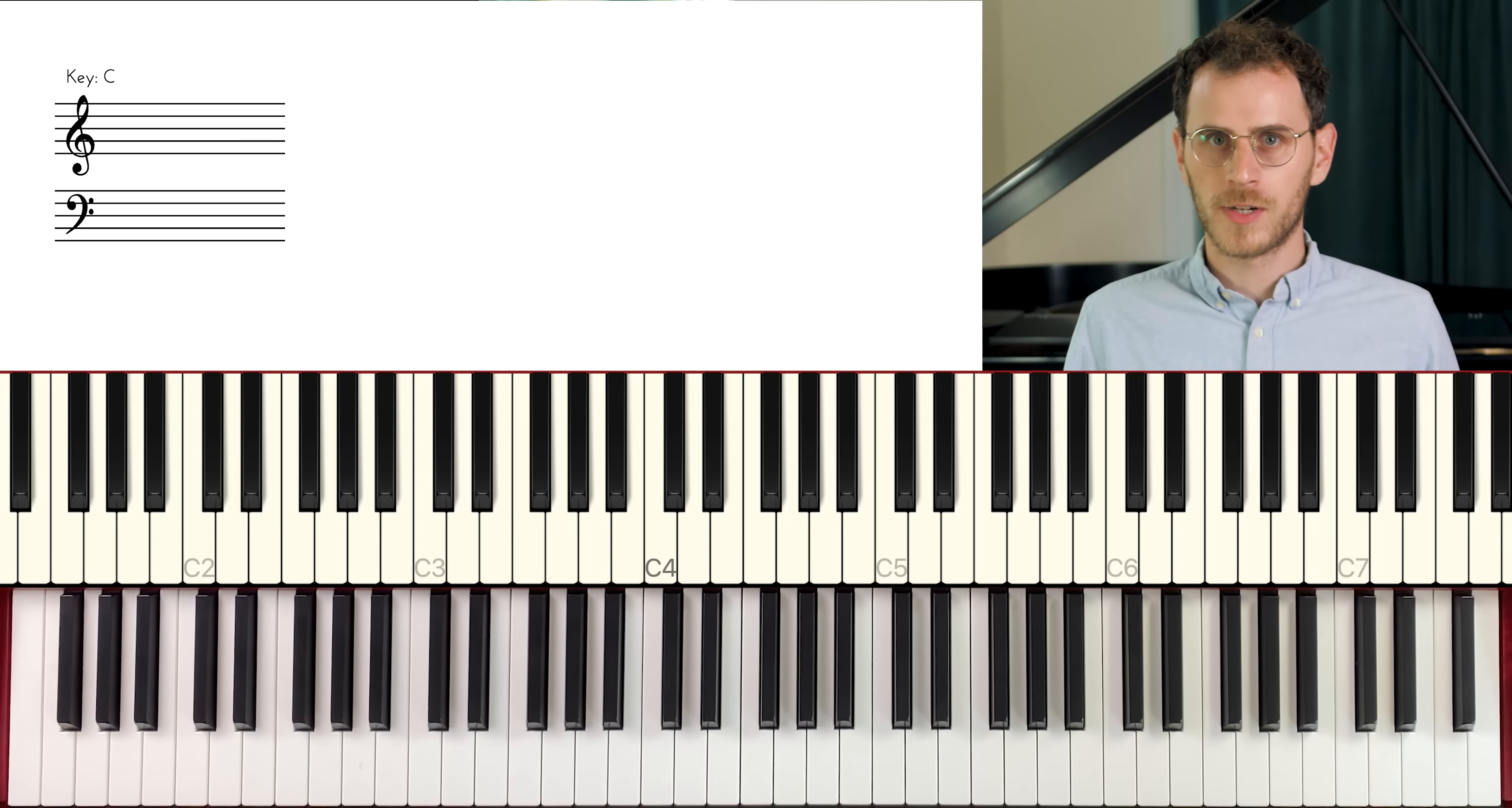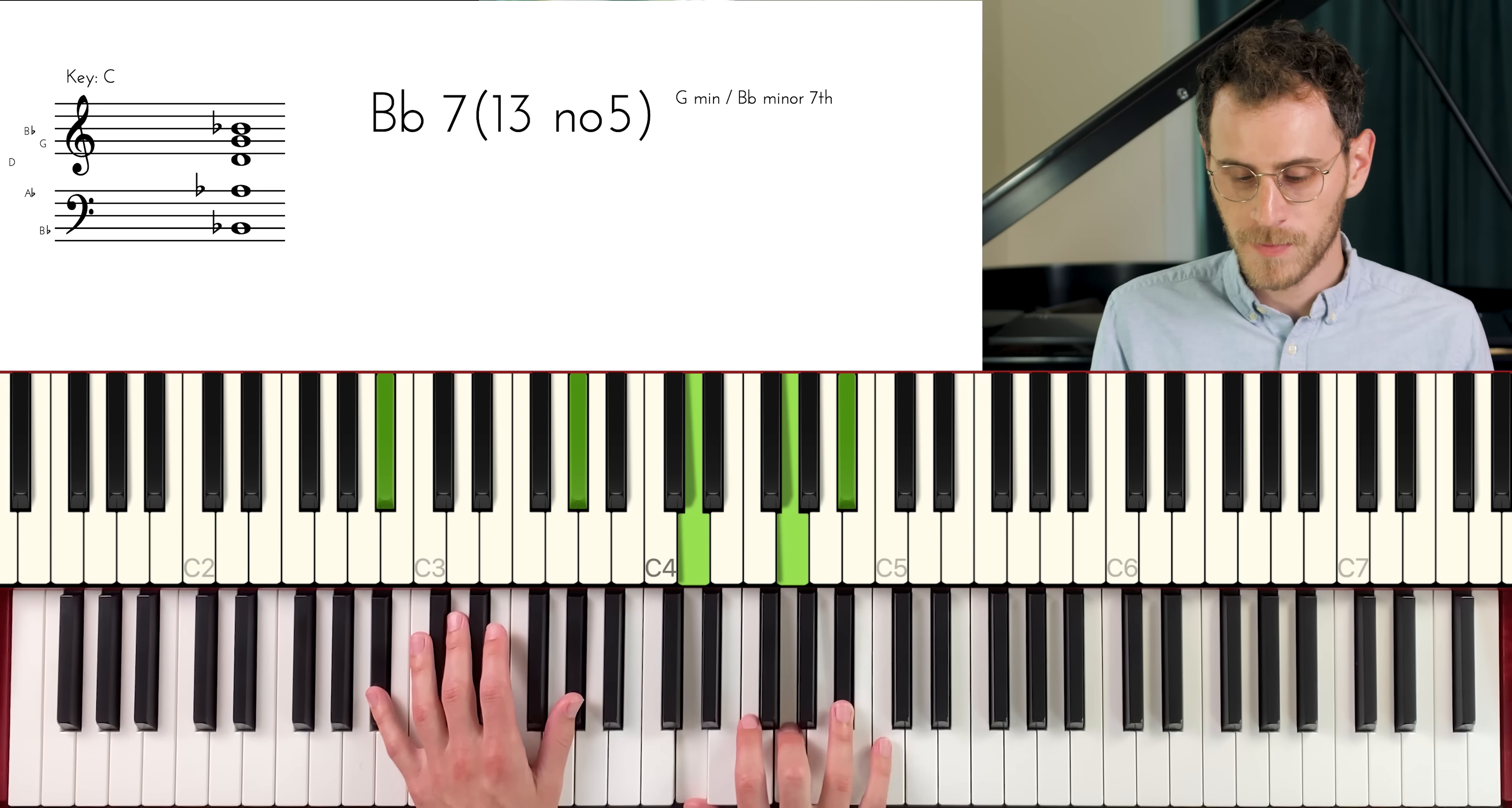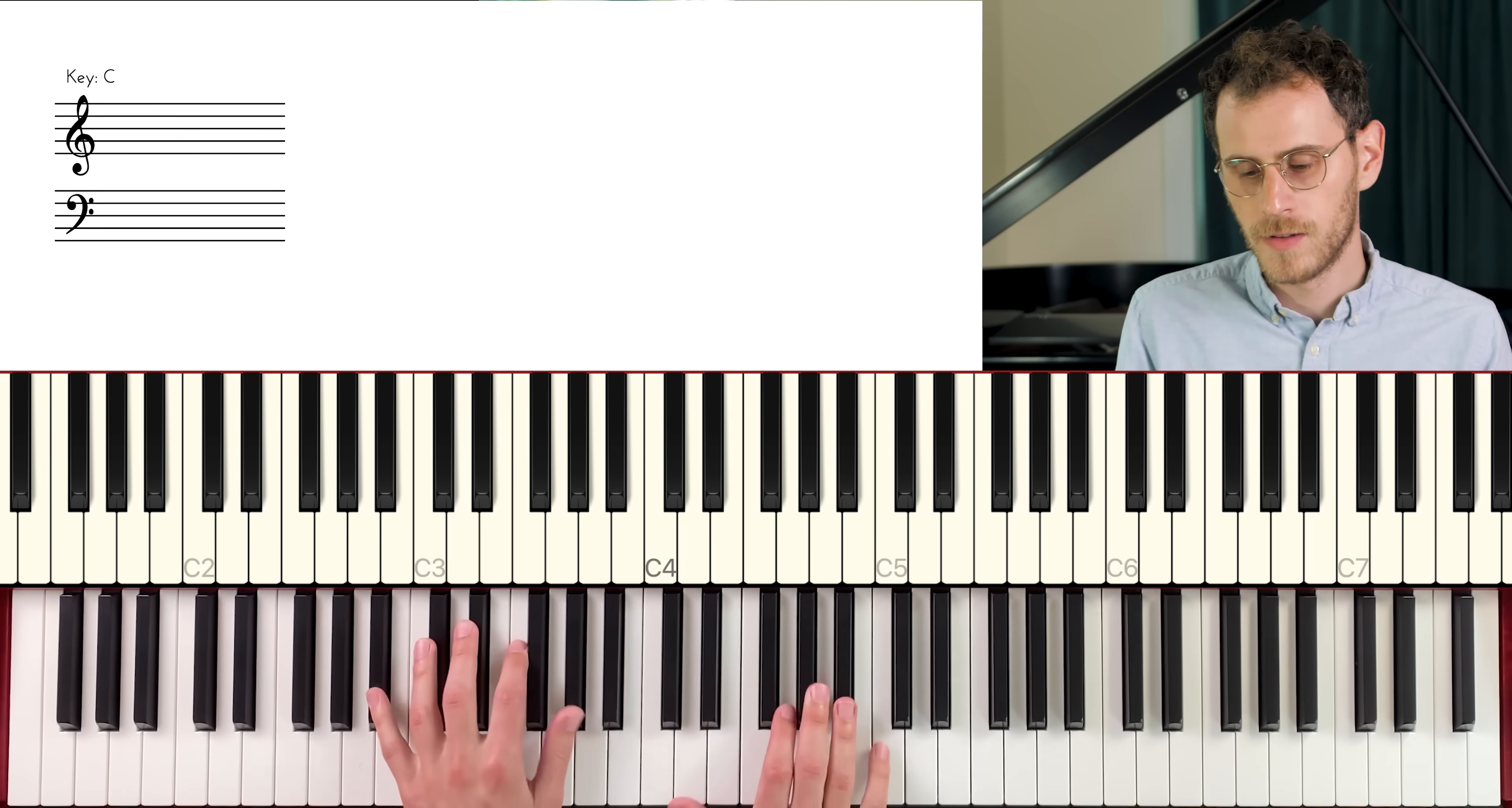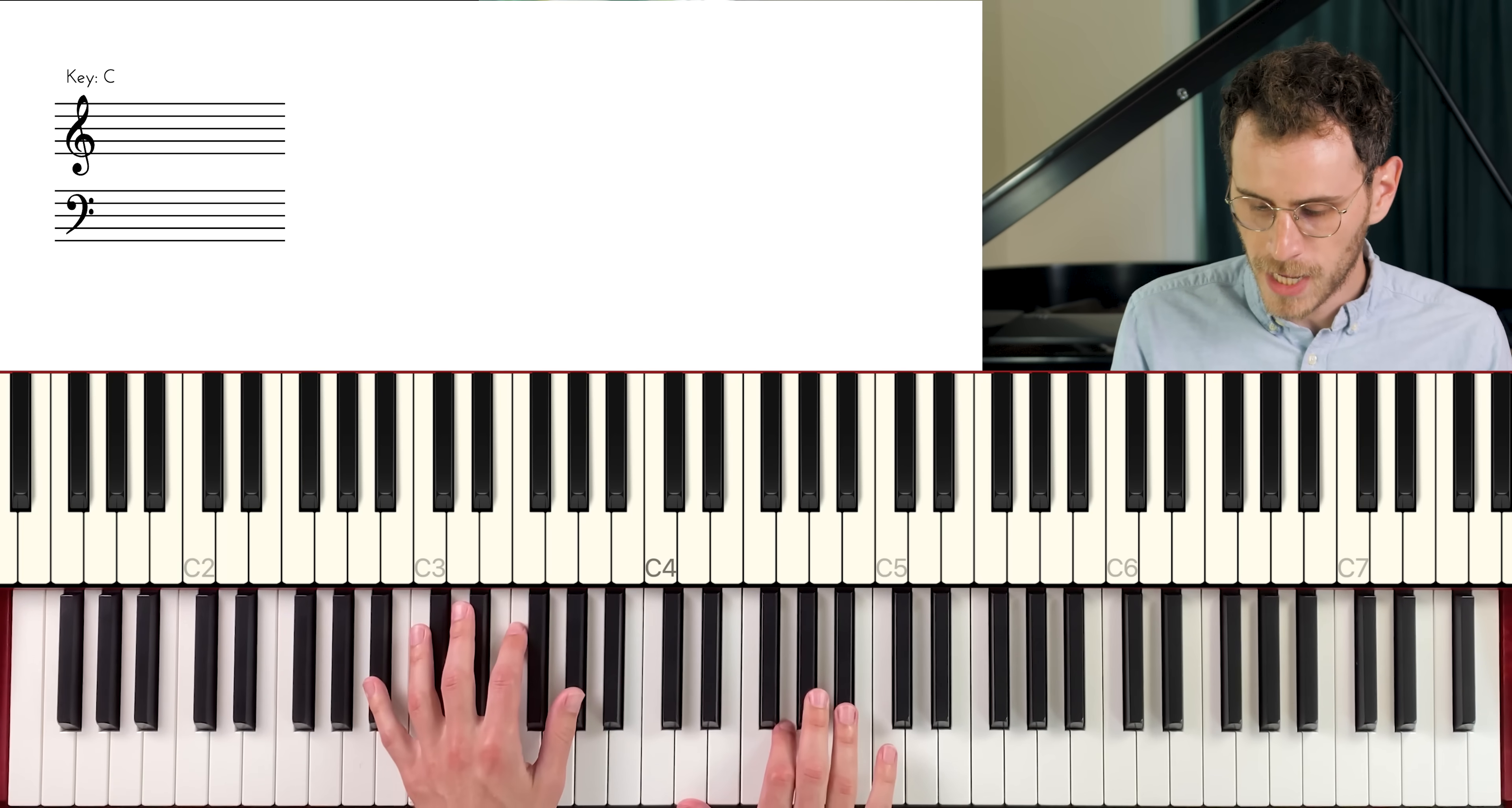One of the first things we can do to create some inner motion is fill in this 5-1 with some changing extensions, or kind of a chord in between. Right now we're just doing B-flat 13. What if we throw something in the middle here? So we kind of have this motion.